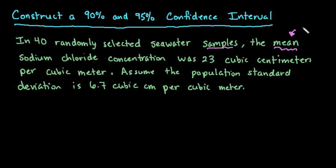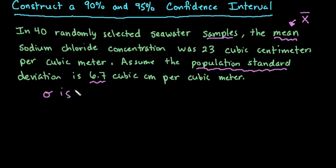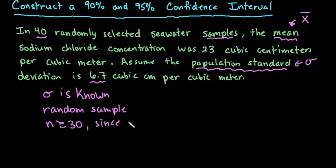One of the intervals is called a z-interval. The other is called a t-interval. The difference between the two is whether or not you know the population standard deviation. For this one, since it says we know the population standard deviation is 6.7, that tells me that sigma is known. Since sigma is known, and we have a random sample, and it tells us that our sample size is 40, n is greater than or equal to 30 since n equals 40.